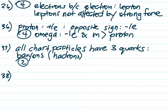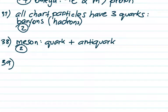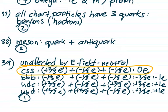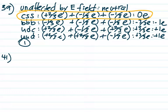Number 38: according to the standard model of particle physics, a meson is a quark and an antiquark — choice two. Quarks don't combine with neutrinos, three quarks is a baryon not a meson, and leptons and antileptons don't pair up into a particle. Number 39: a particle unaffected by an electric field means it has no charge — it has to be neutral. All four choices have three quarks and are baryons. Working out the charges, we get zero, negative one, positive one, and positive one. The neutral one — not affected by an electric field — is charm, strange, strange, choice one. All charges come from page three of the reference table.